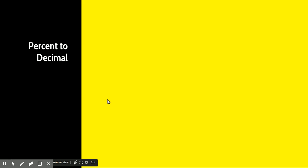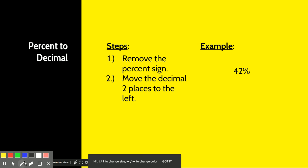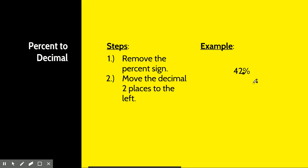Now what about percent to decimal? And the steps on this one are, first remove the percent sign, and then simply move the decimal two places to the left. So say that we have got 42%. One thing that I try to remember, if you don't see the decimal here, the decimal is actually between that last number and the percent. So there's actually a decimal there, and it basically is just saying that that's 42.0%.